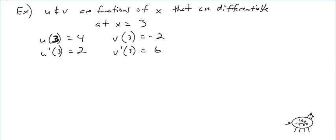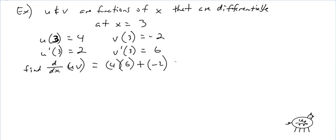Find d/dx of uv first. That's just the product rule: the first times the derivative of the second, so u(3) times v'(3) which is 4 times 6, plus the second v(3) which is −2 times the derivative of the first u'(3) which is 2. So 24 minus 4 equals 20 — that's the answer.